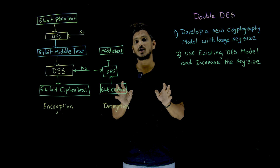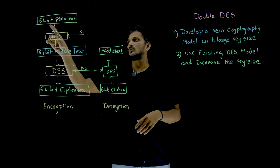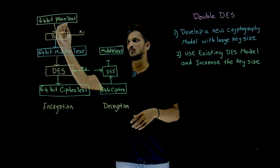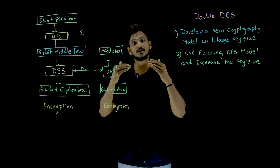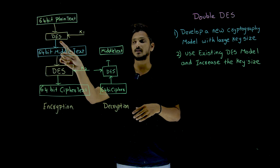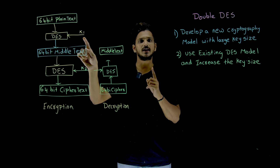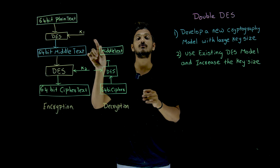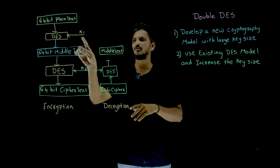So how does double DES work? Let's try to understand. Take the 64-bit plain text — this is moved into the DES, meaning all 16 rounds are going to happen here. In this DES, they are going to take K1 as the key. What's the key size? 56-bit key. We are going to use the 56-bit key here.